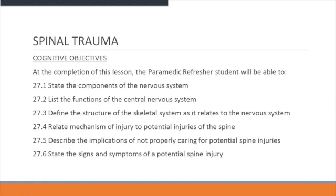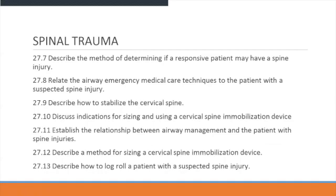Students should also describe the implications of not properly caring for potential spinal injuries, state the signs and symptoms of potential spinal injuries, describe the method of determining if a responsive patient may have spinal injuries, relate airway management care techniques to the patient with suspected spinal injuries, describe how to stabilize the cervical spine, and discuss the indications for sizing and using a cervical immobilization device.